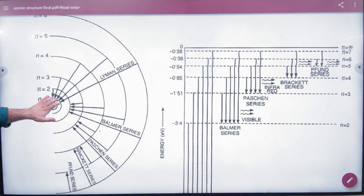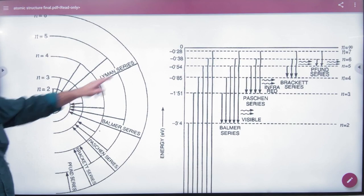But when n is equal to 1, what do we say in spectral lines? Which series? The Lyman series.